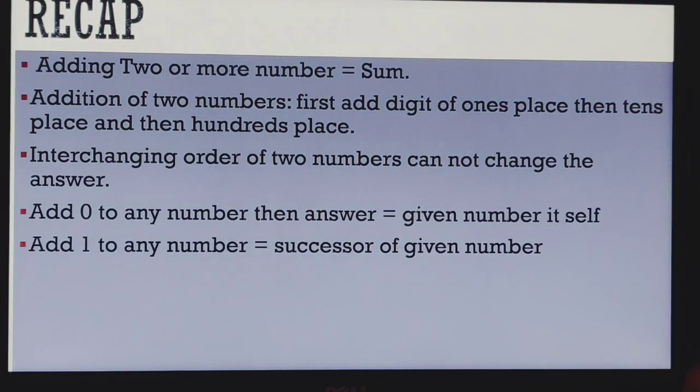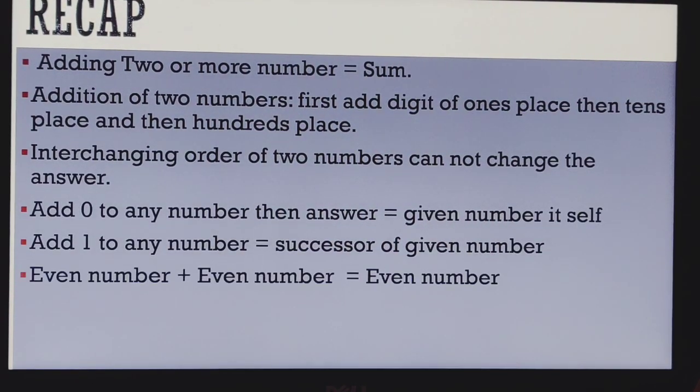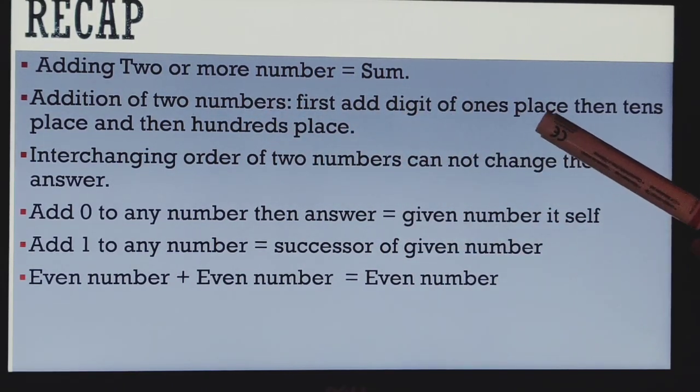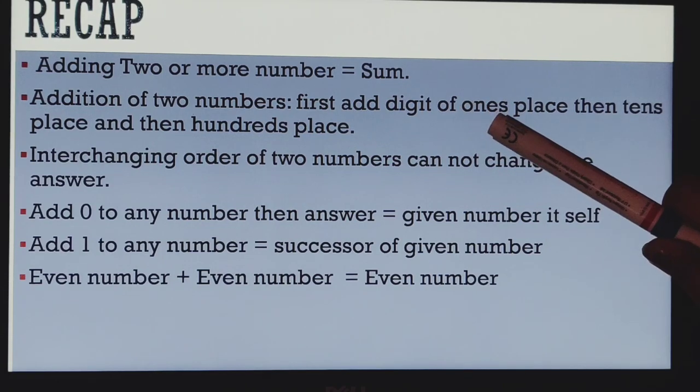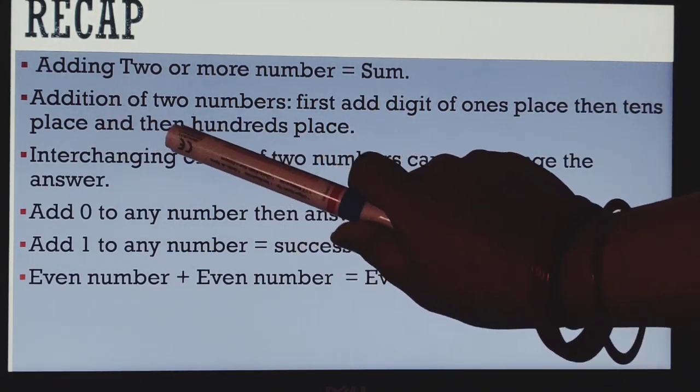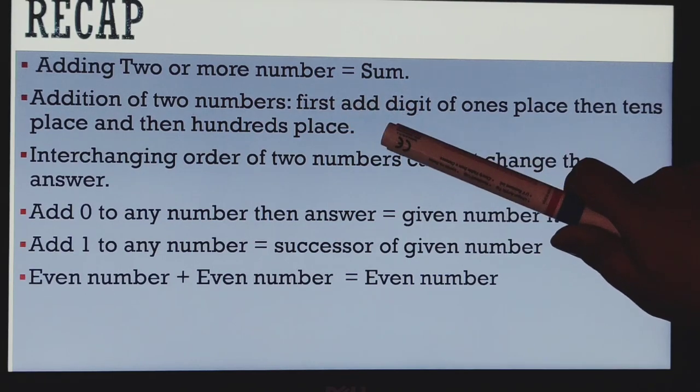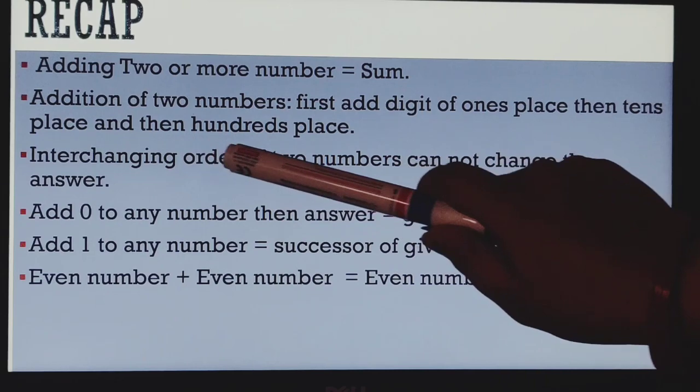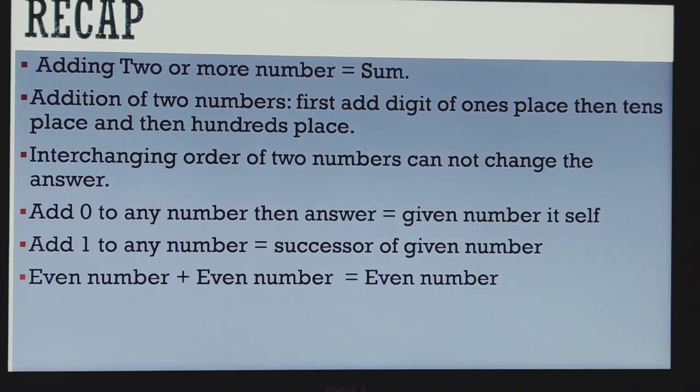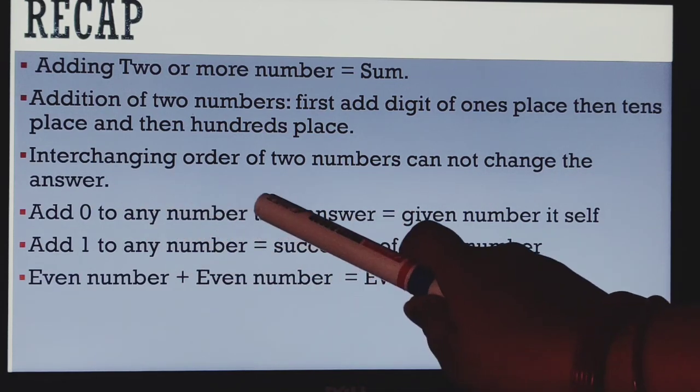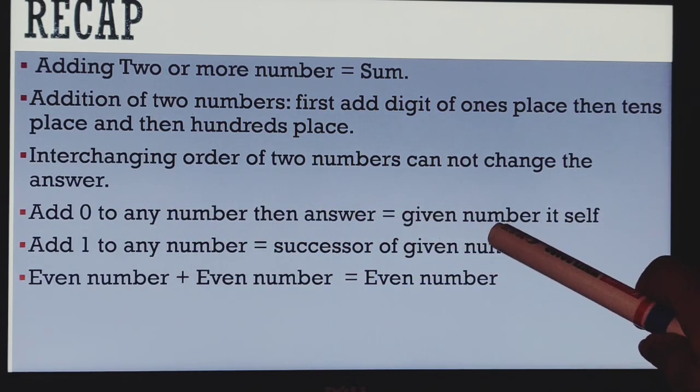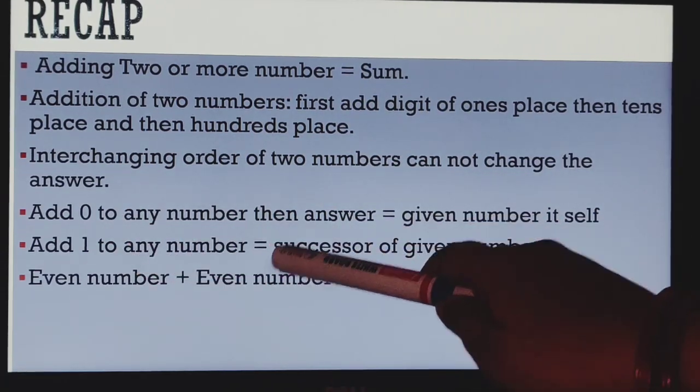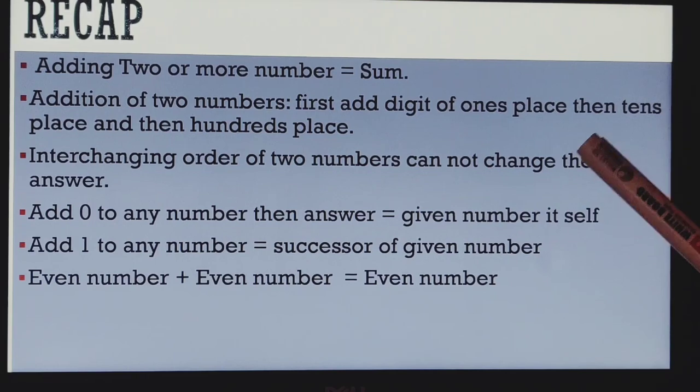Okay, adding two or more numbers makes our addition. While adding two numbers, first add digit of ones place. We have to do addition with that ones place digit, then tens place, and at last we have to do hundreds place. If we are interchanging, means we are changing the order of two numbers, the answer will not be changed. Adding zero to any number, we will get the answer of that particular number. When we add 1 to any number, we will get the successor of that particular number.